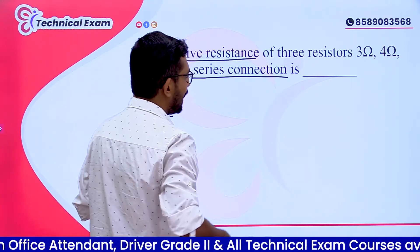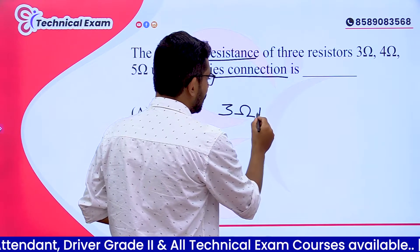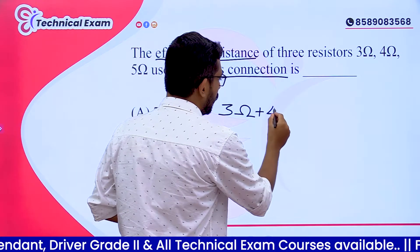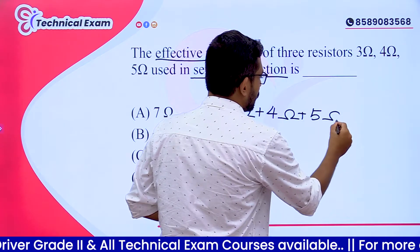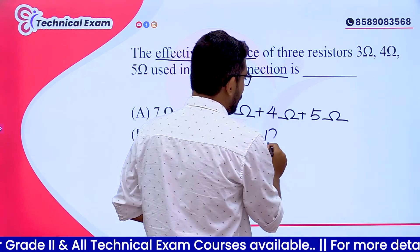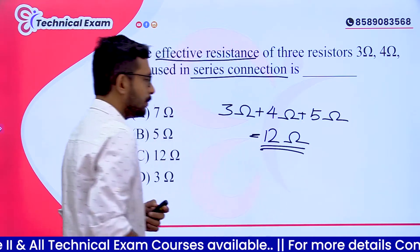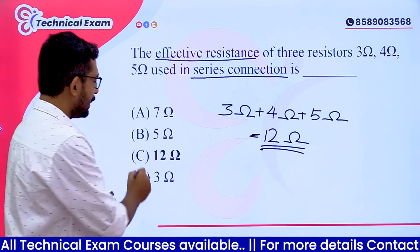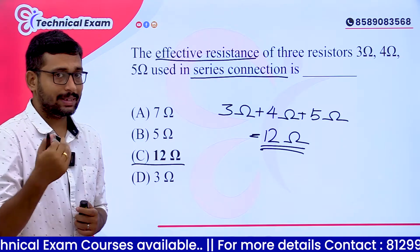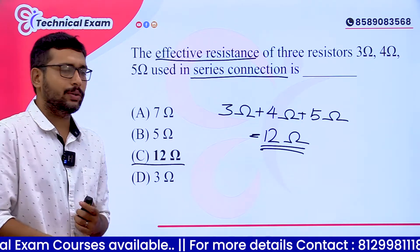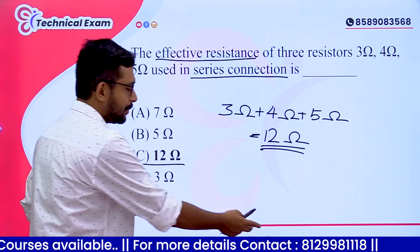In a series connection, just add the resistances: 3 ohm + 4 ohm + 5 ohm = 12 ohm. So the answer is 12 ohm, Option C.